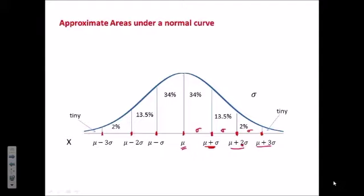If we do that, then the areas of those intervals, the areas under the curve, are going to be always the same percents. This area from the mean to one standard deviation above the mean is always 34%.